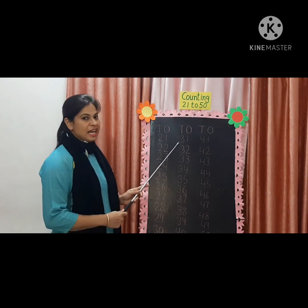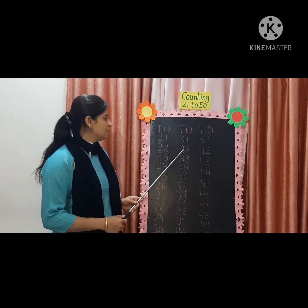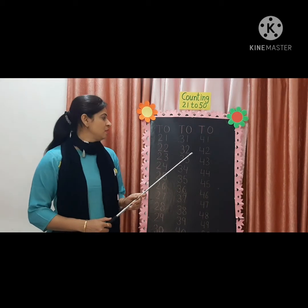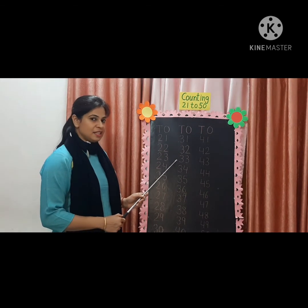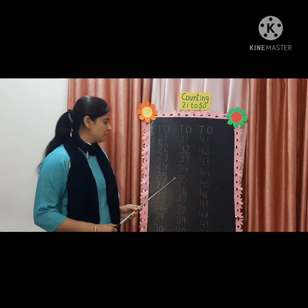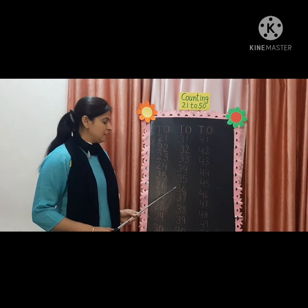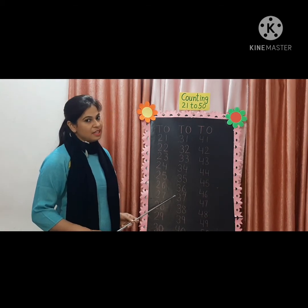Next line. 3, 1 — 31. 3, 2 — 32. 3, 3 — 33. 3, 4 — 34. 3, 5 — 35. 3, 6 — 36. 3, 7 — 37.